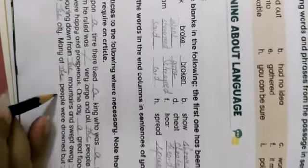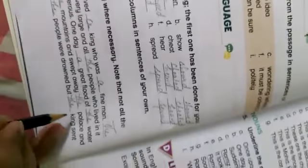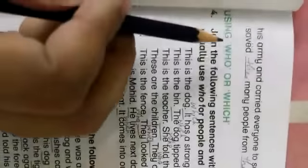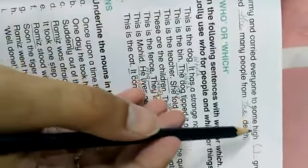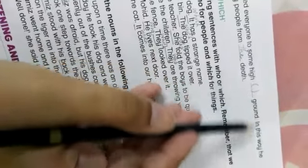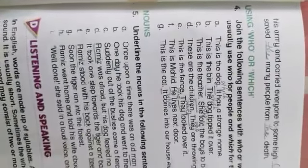Chunke yeh article nahi hai, so it means ke aap yahaan pe bhi cut kar sakte hain. One day a great flood of water came pouring down the mountains and swept away the palace and most of the city. Many of the people were drowned. The king sent his army and carried everyone to high ground. In this way he saved many people from death.